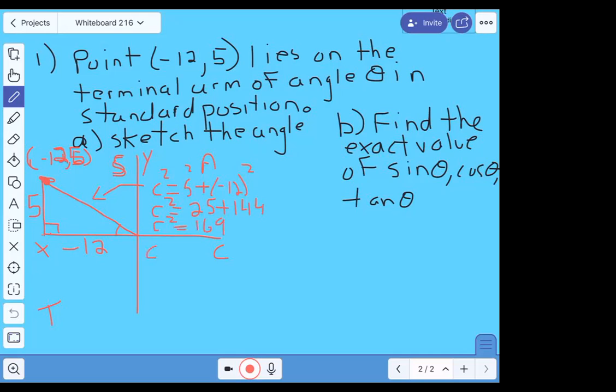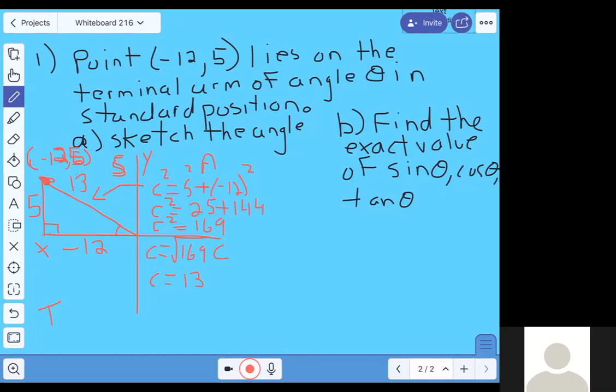And that means c is the square root of that. And the square root of 169 is exactly 13. So we actually even have this side of the triangle, we have all three sides. Okay, anybody got any questions for me at that point? Are we okay so far?